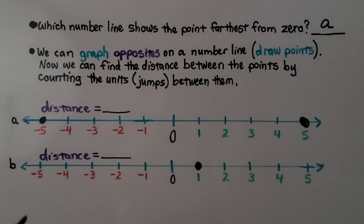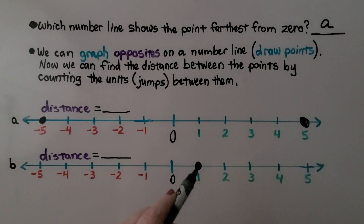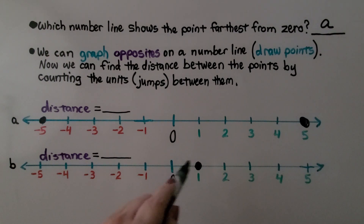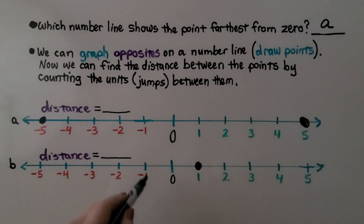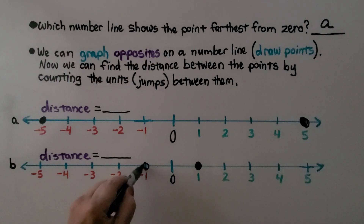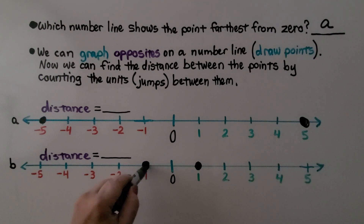For positive one, it's one jump away from zero. We go on the other side of zero, one jump away, and it would be negative one.